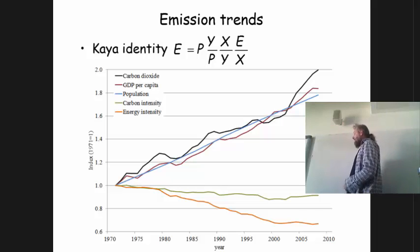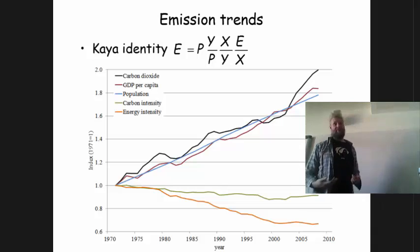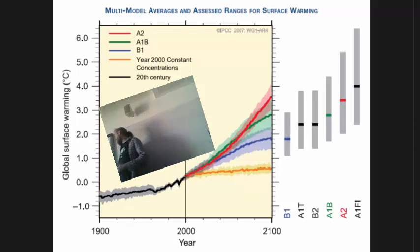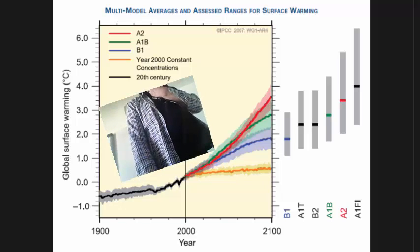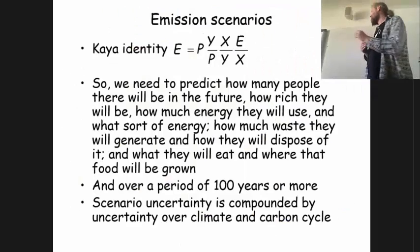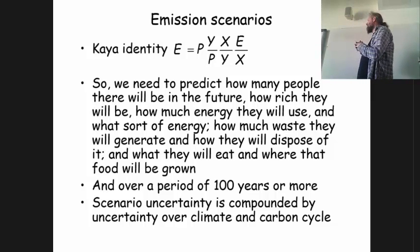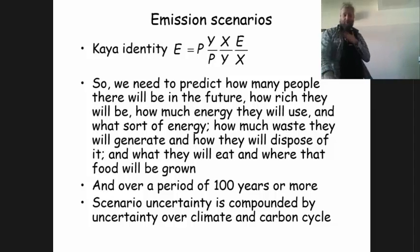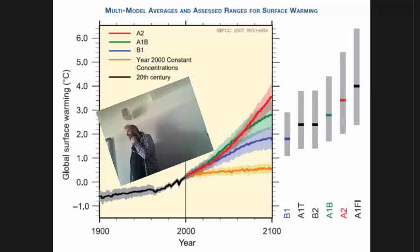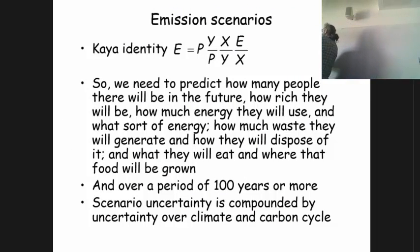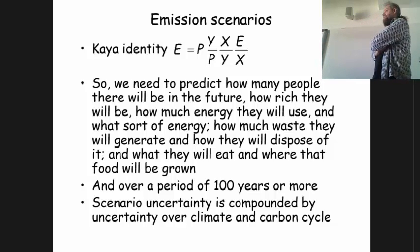And once we understand where emissions came from in the past, we can wonder where they go in the future. The different colors on the graph denote different ways the future may unfold. People who developed those curves took something a bit more complicated than the Kaya identity but very similar in structure, and projected these things forward. For climate change the future means at least 100 years — here it's 85 years, but we need to go at least to the end of this century, preferably a bit further, to fully understand the scale of the problem.